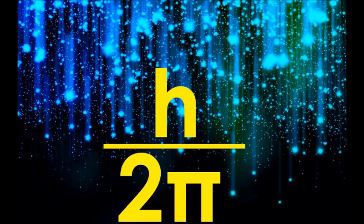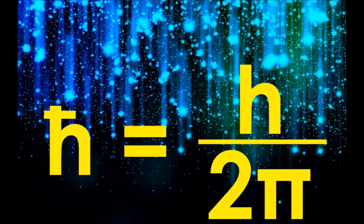This expression is so common, in fact, that a new letter was invented to represent it. H-bar, which denotes Planck's reduced constant. H-bar equals h divided by 2 pi.